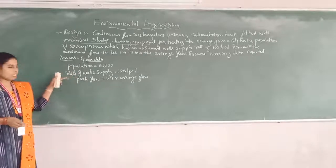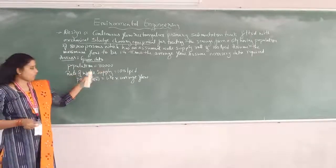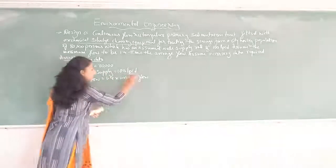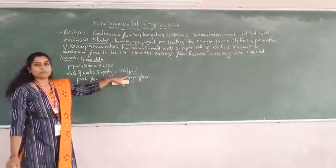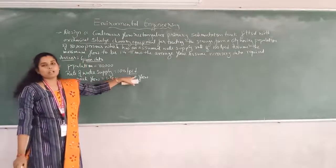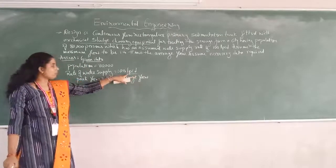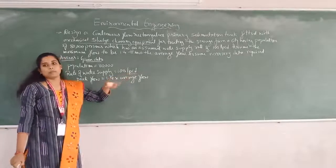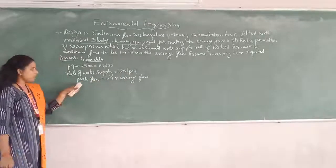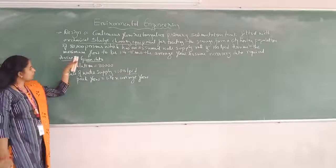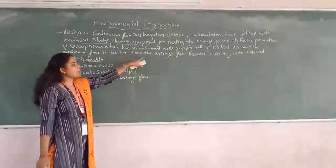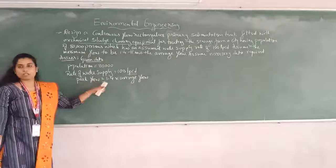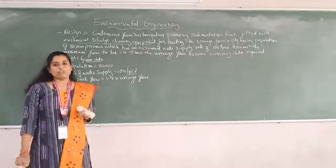The given data: Population = 80,000. Rate of water supply = 100 LPCD — that is, liters per capita per day. Maximum flow is given as 1.4 times the average flow, meaning peak flow = 1.4 × average flow.